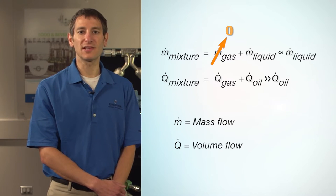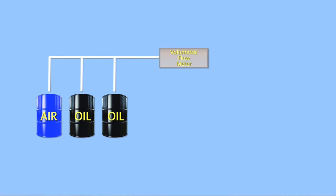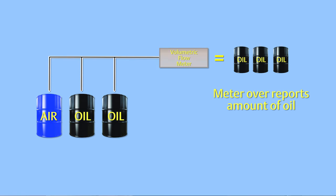The same is not true for density and volume flow. For example, if two barrels of oil and one barrel of air flow through a volumetric flow meter, the meter will simply measure three barrels, and thus will over-report the amount of oil.